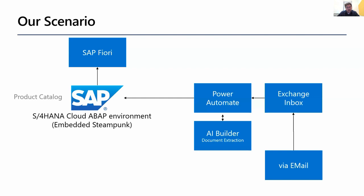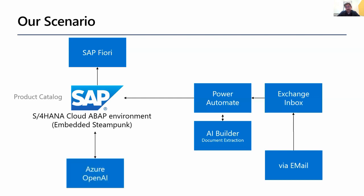In some cases the information in these documents is not complete - there are things missing. In our scenario, we'll see that some description information is actually missing. Instead of asking the functional consultant to figure it out, we want to give them guidance. That's where we'll use Azure OpenAI to generate some text. We'll show you how simple it is from ABAP to call Azure OpenAI and leverage OpenAI functionalities. In our case we'll just generate a text, but potentially this could be much more complex scenarios.